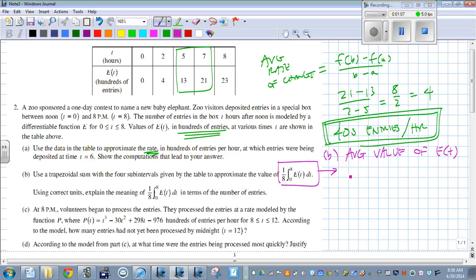But to write it a little bit nicer than that, our value is going to be the average number of entries from t equals 0 to t equals 8. So that's what this represents.